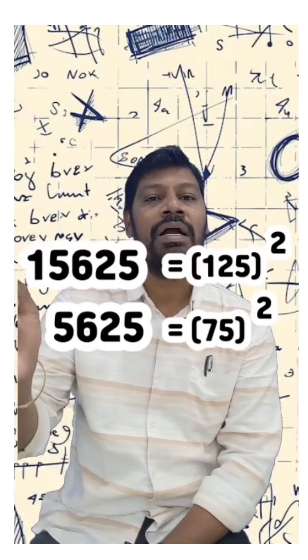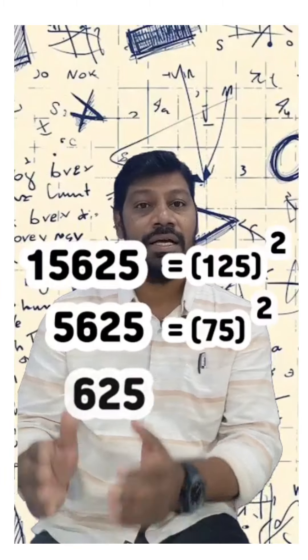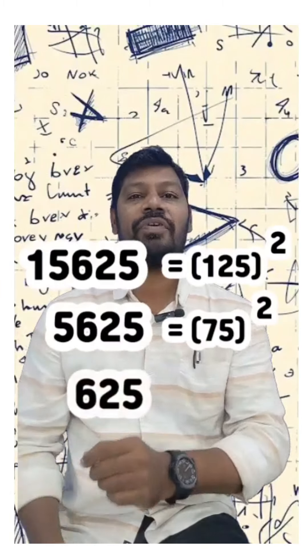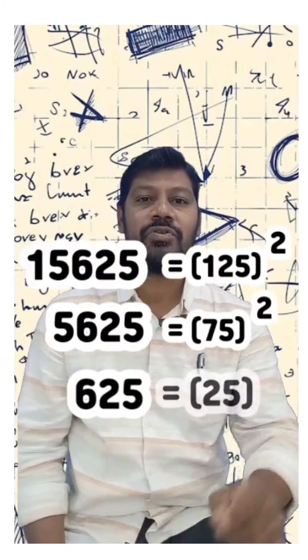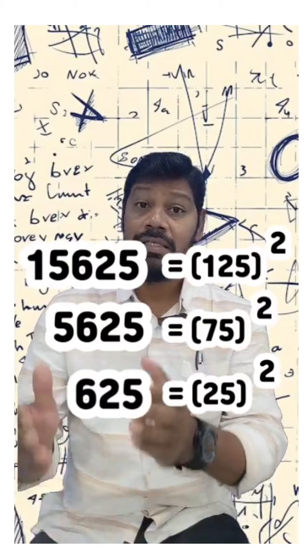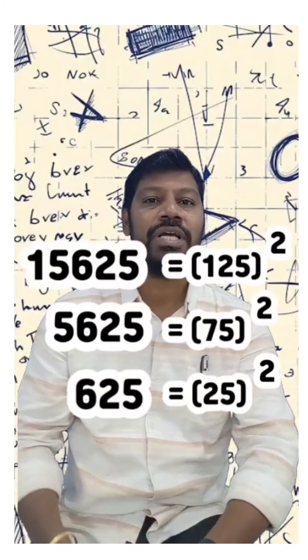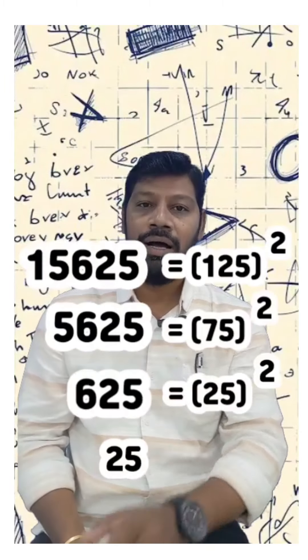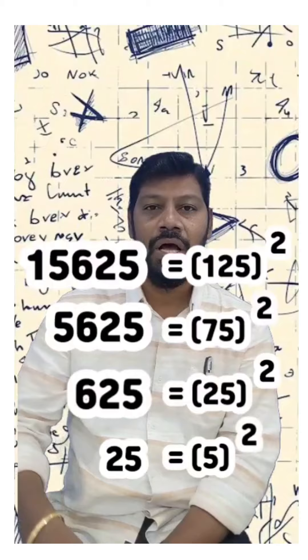5625 is a perfect square which is 75 squared. In terms of 625, the same square is 25 squared. And 25 squared is a perfect square which is 5 squared.